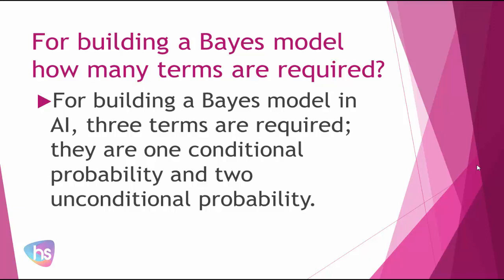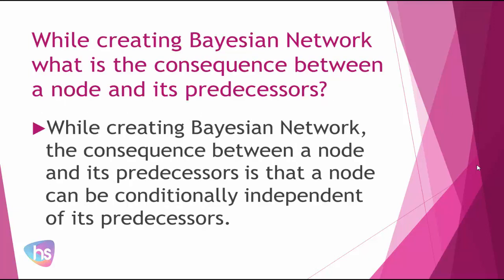For building a Bayes model, how many terms are required? For building a Bayes model in AI, three terms are required to be considered. They are: one, conditional probability; and two, unconditional probability. With these terms the Bayes model can be successfully implemented.